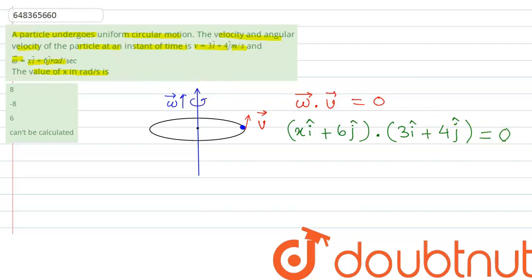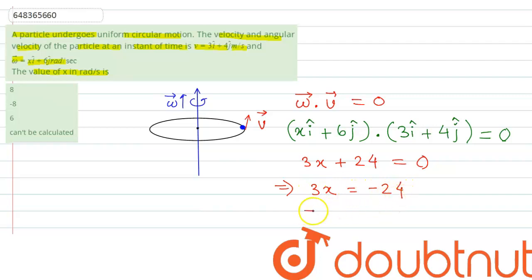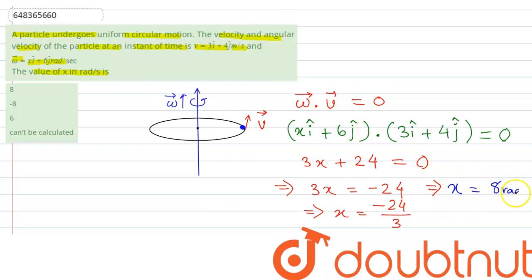So if we multiply x with 3 we get 3x, plus 6 into 4 is 24, and this will be equal to 0. So we can write 3x + 24 = 0, which gives x = -24 divided by 3. Therefore x = -8 radian per second. This is in the negative direction, so x is minus 8 radian per second.